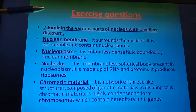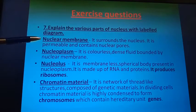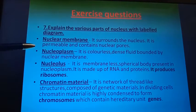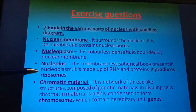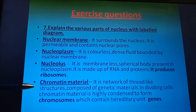Next, explain the various parts of the nucleus with a labeled diagram. The nucleus mainly consists of four parts: nuclear membrane, nucleoplasm, nucleolus, and chromatin material. The nuclear membrane surrounds the nucleus; it is permeable and contains nuclear pores. Nucleoplasm is a colorless dense fluid. Nucleolus is a membrane-less spherical body present in the nucleoplasm; it is made up of RNA and proteins, and it produces ribosomes. RNA stands for ribonucleic acid.